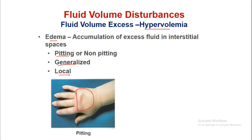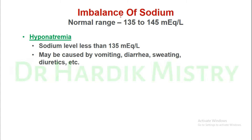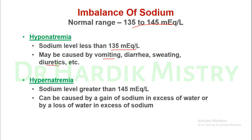Sodium imbalance: the normal range of sodium is 135–145 mEq/L. Hyponatremia is when sodium is less than 135 mEq/L, caused by vomiting, diarrhea, sweating, and diuretics. Hypernatremia is when sodium is greater than 145 mEq/L, caused by a gain of sodium in excess of water, or by loss of water in excess of sodium.